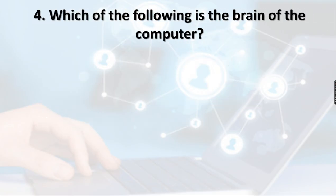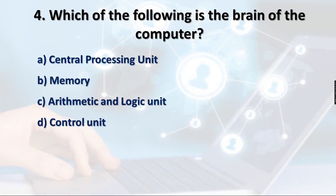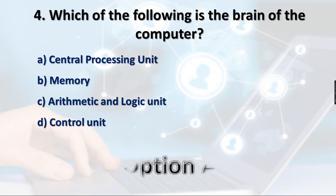Question 4: Which of the following is the brain of the computer? Option A: Central Processing Unit, Option B: Memory Unit, Option C: Arithmetic Logic Unit, Option D: Control Unit. The Central Processing Unit is called the brain of the computer, so option A is the right answer.